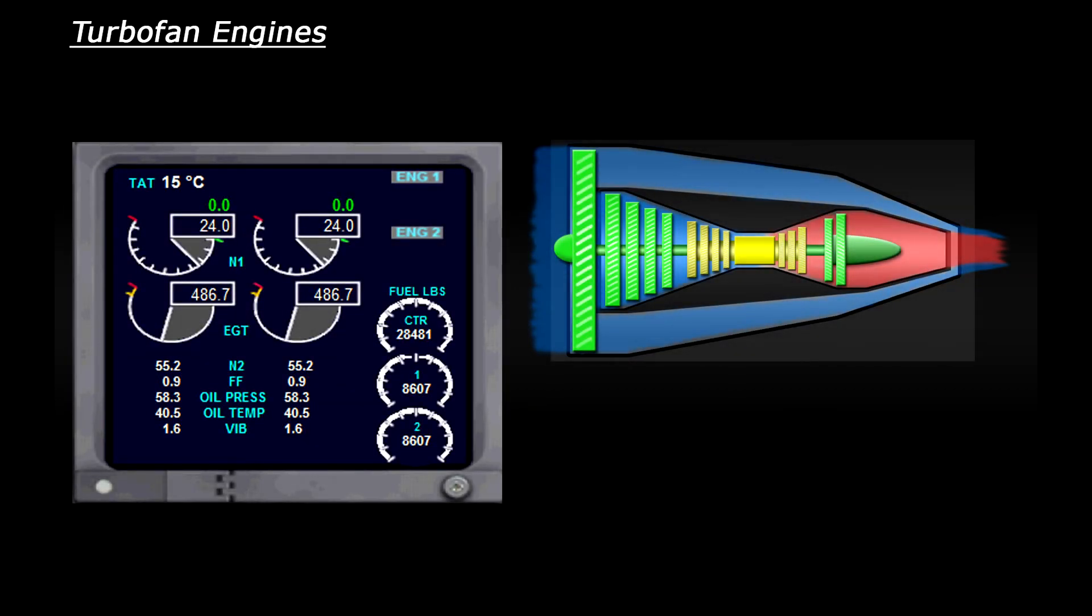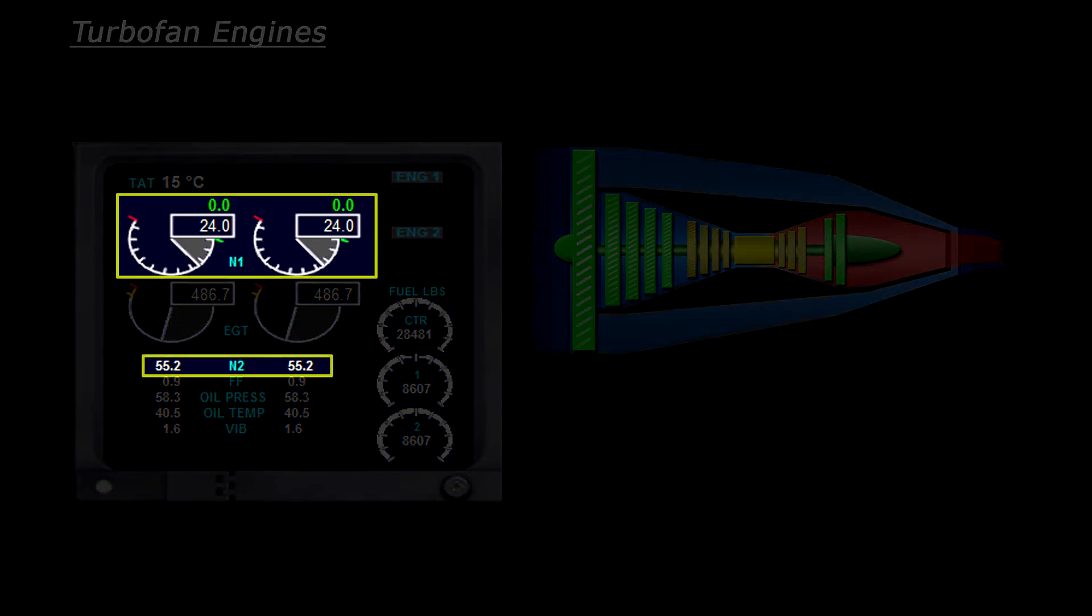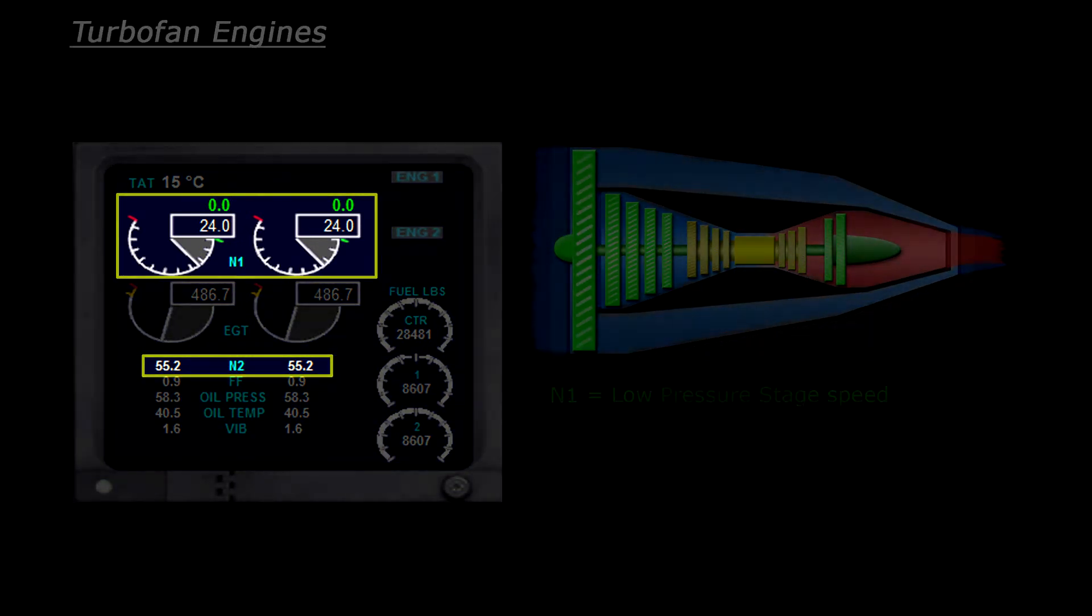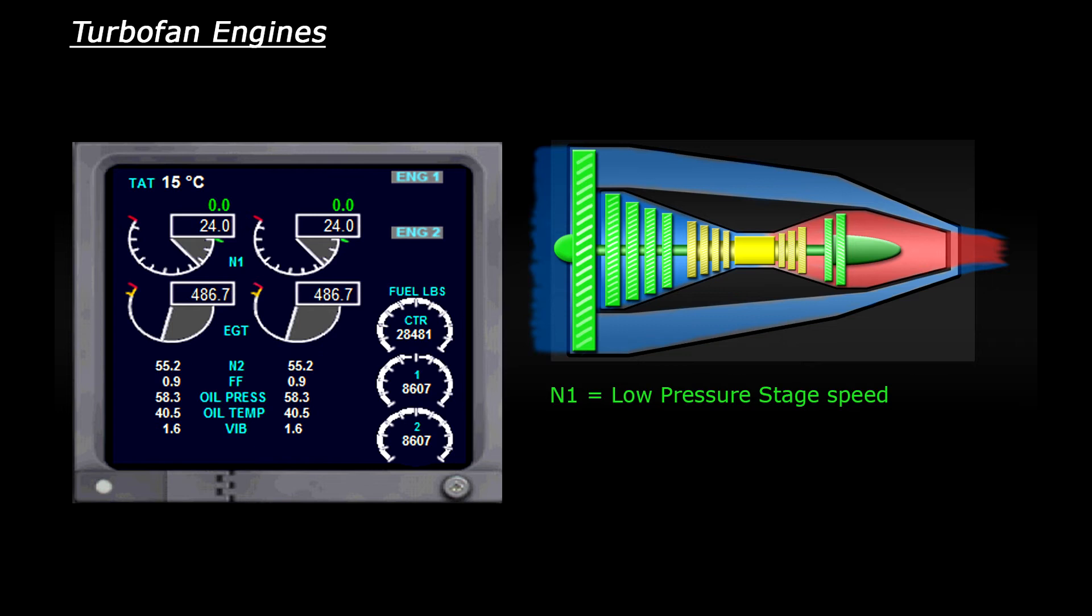So now we understand how the engine is constructed, we'll be able to understand the engine readouts in the cockpit. This is the engine display from the default Boeing 737 in FSX. Aircraft will usually display an N1 and N2 value. The N1 value represents the speed of the low pressure stage indicated as a percentage of performance. The N2 number relates to the high pressure stage.